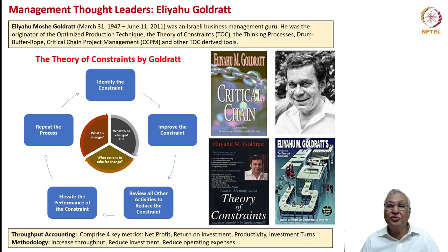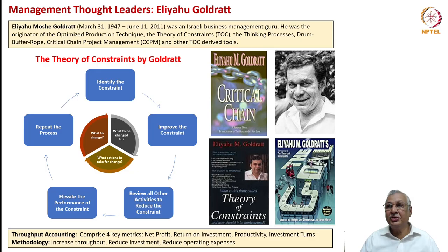Goldratt was so bold and believing in his theories that his consultancy organization would promise that the current revenue of the company would become the future profit — demonstrating the enormous operational excellence he proposed to achieve. The Theory of Constraints has a conceptual framework: first, identify the constraint; then improve the constraint; review all other activities to reduce the constraint to the minimum; elevate the performance of the constraint; and then repeat the process.